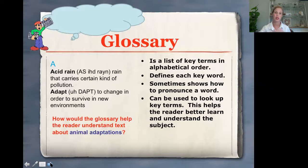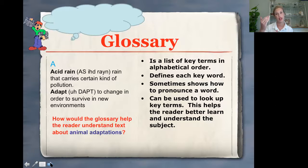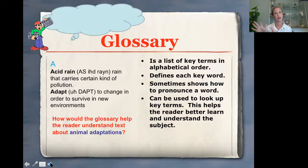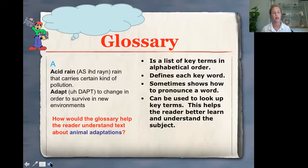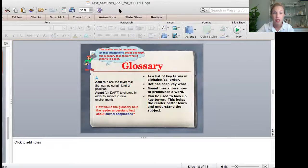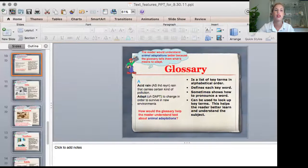The very last one we're going to talk about is the glossary. The glossary is kind of like a miniature dictionary — it's in the back of your book, and it's where you can find all of the words that are bold, italic, or colored in the story along with their definitions. If you don't know a word, check the glossary. I know that's a lot to go over, but we're going to be looking at these features in every story throughout the next few weeks in our nonfiction unit.